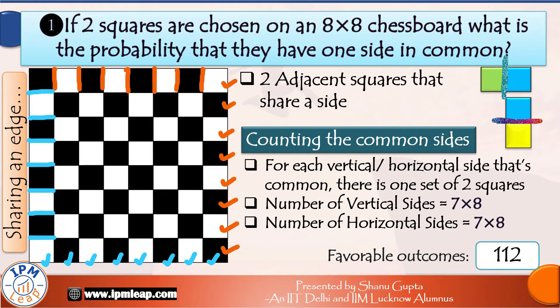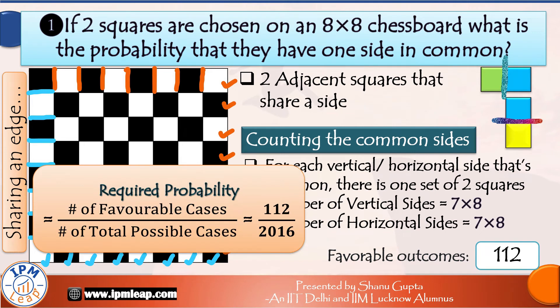For each of these sides there is exactly one set of two squares that are sharing it. So in how many ways can we select two squares that share a common side? It is simply equal to the number of common sides we just counted: 112. The number of favorable cases is 112. Therefore the required probability is number of favorable cases upon number of total possible cases, which will be equal to 112 upon 2016.